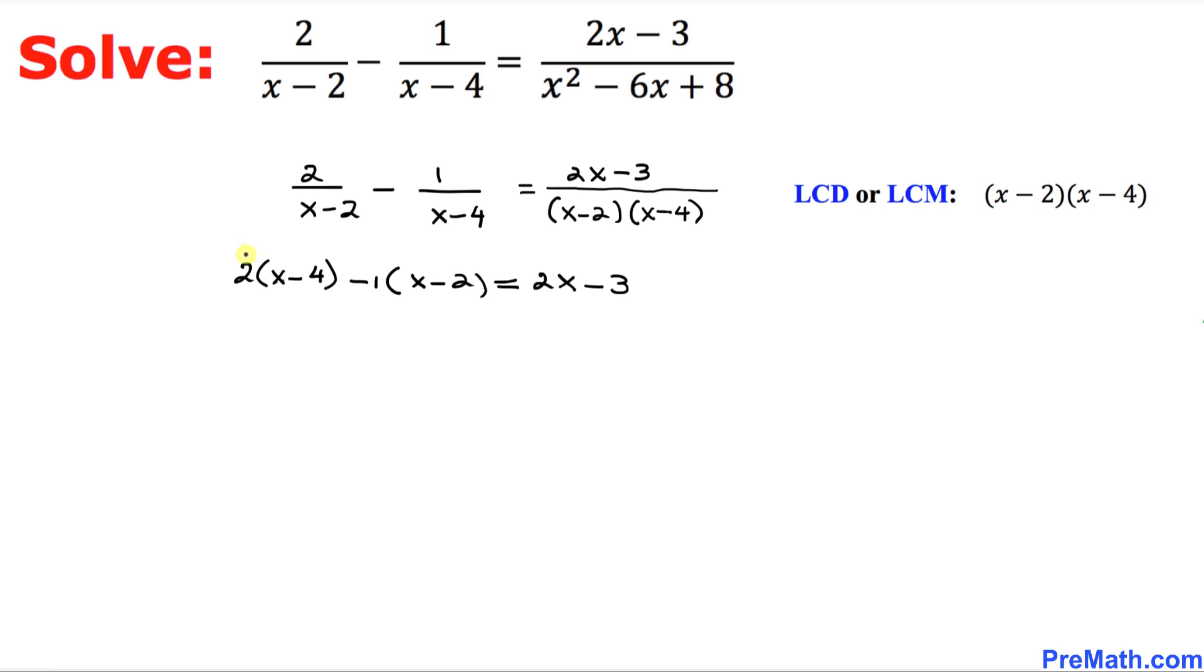And now in the next step, we are going to distribute over here and likewise over here. So 2 times x minus 4 is going to give us 2x minus 8. And here it's going to give us negative x, negative 1x rather, plus negative 1 times negative 2 is going to give us positive 2 equals to 2x minus 3.